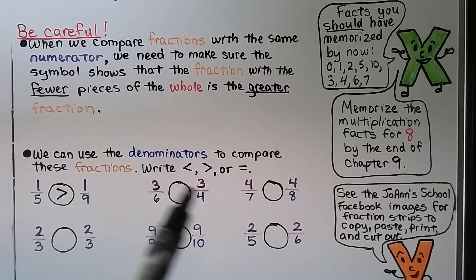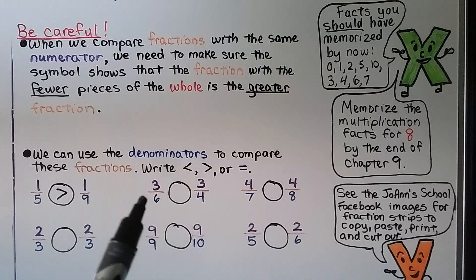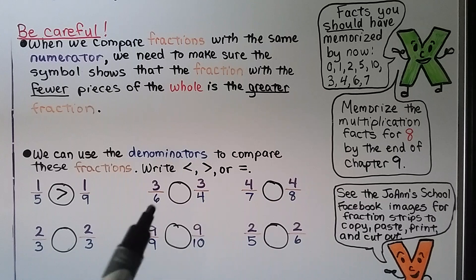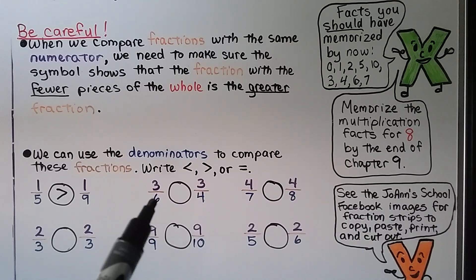For this one, they have the same numerator: three. We look at the denominator — four is a much lower number than six. So three-sixths is less than three-fourths.